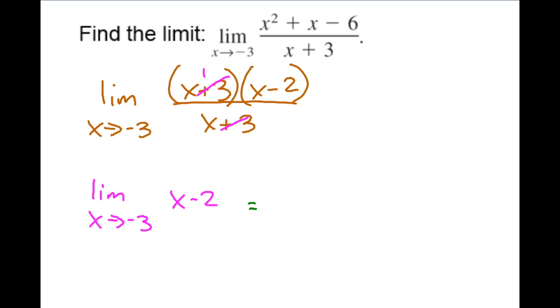So we've got an equivalent form x minus 2 of this rational function and now we can actually plug in the negative 3 using direct substitution. So negative 3 minus 2 will give us negative 5.